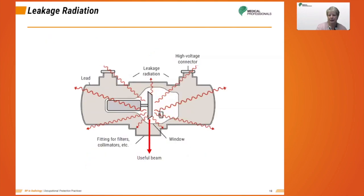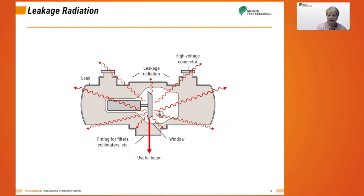Scatter is a form of secondary radiation. Another type of secondary radiation is leakage radiation, or off-focus radiation. When x-rays are produced, the majority are directed through the window and towards the patient. Leakage radiation is radiation leaving the x-ray tube in a direction other than the intended direction through the window. The x-ray tube housing should limit the amount of leakage radiation. Regulations in the United States stipulate that leakage radiation must not exceed 1 milligray per hour at a distance of 1 meter from the source when operating at maximum potential and current.